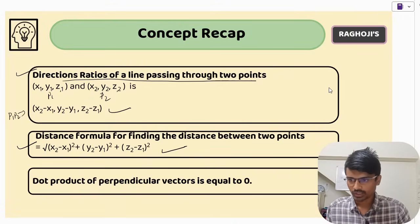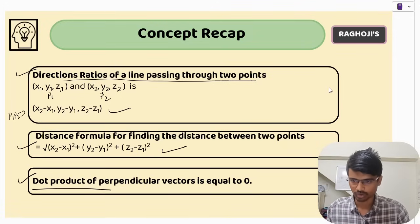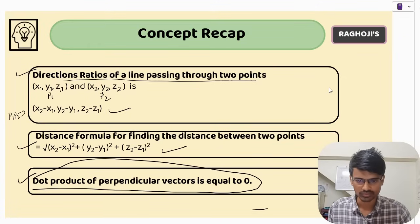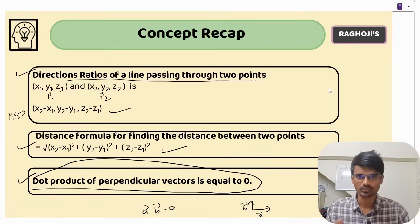There is one more property that we are going to use: the dot product of perpendicular vectors is equal to zero. So if you have two vectors, say vector a and vector b, then if they are perpendicular, a · b = 0. These are the concepts that we will be applying.